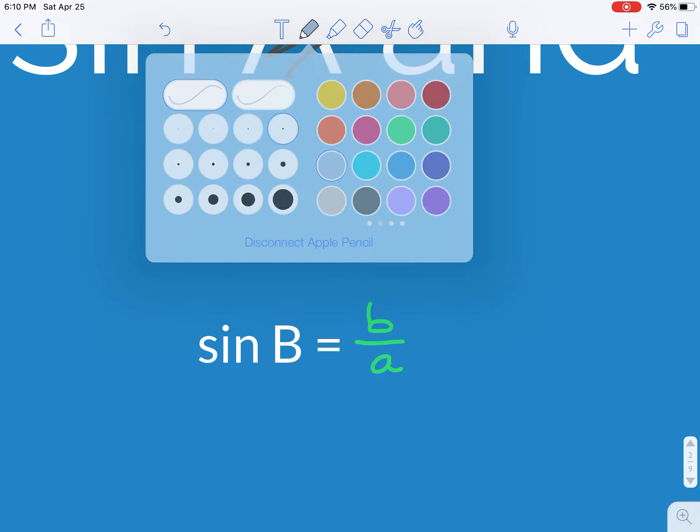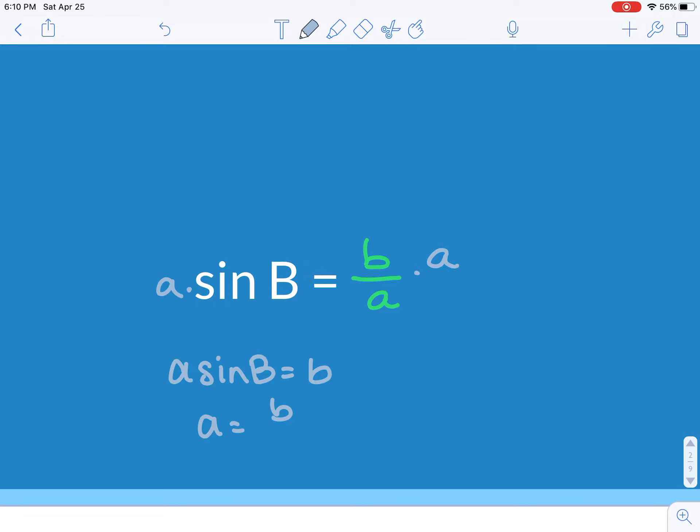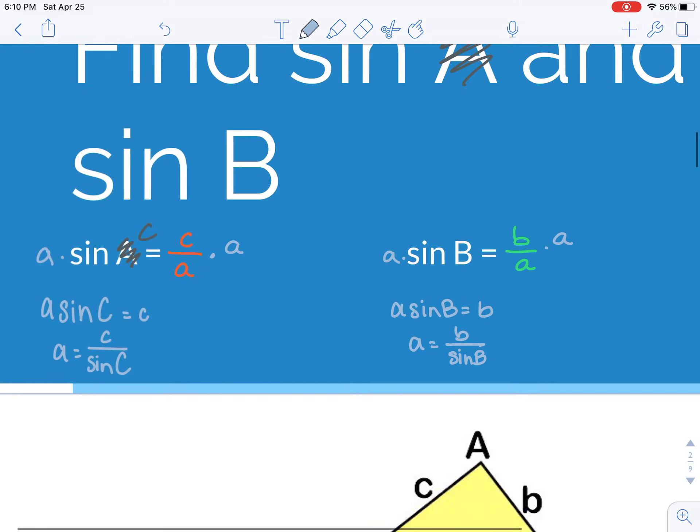over my hypotenuse, little a. And again, I'm going to multiply both sides by A. So I get A times sine of big B equals little b, divide by sine of B,